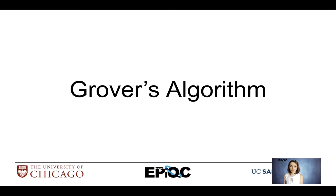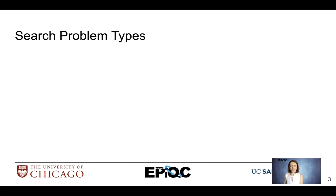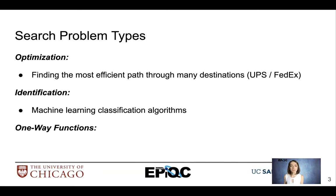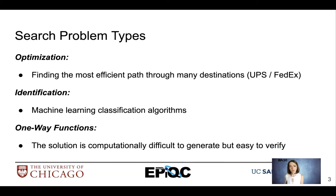In this video we'll be discussing Grover's algorithm, a quantum search algorithm. Let's begin by introducing different types of search problems. There are optimization problems such as finding the most efficient route to deliver packages, identification such as machine learning classification algorithms, and one-way functions where there's a solution that's hard to find but easy to verify.